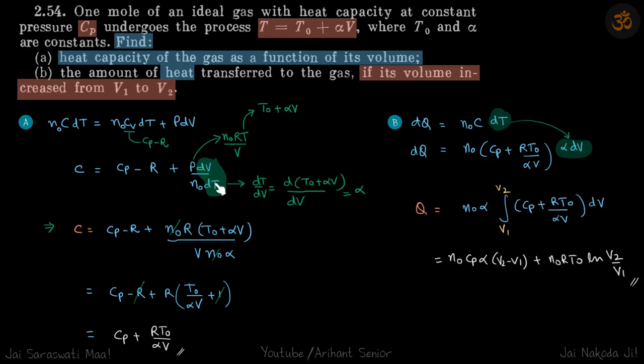We put that here and we need to get rid of pressure because we need the heat capacity as a function of volume. So we'll write P as n0RT by V and temperature again we'll write as T0 plus alpha V. Now we have got the heat capacity in terms of volume. Simplifying that we get our answer.